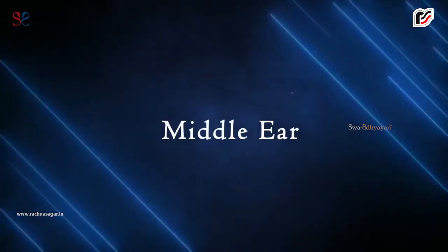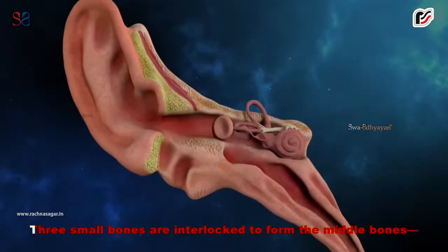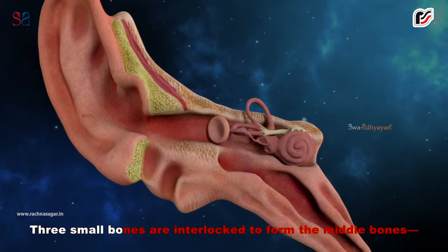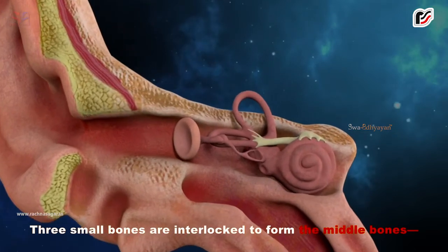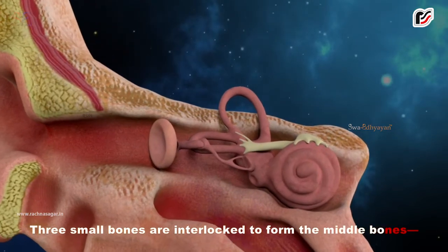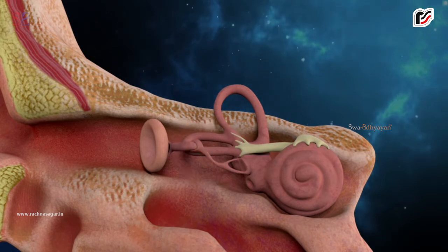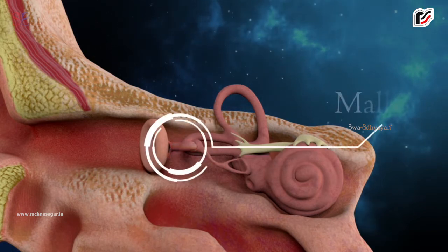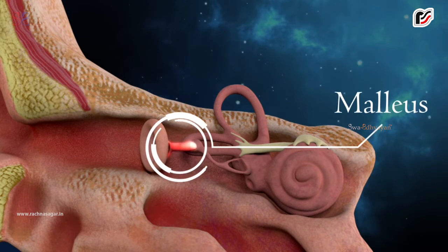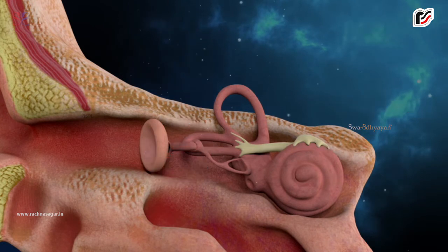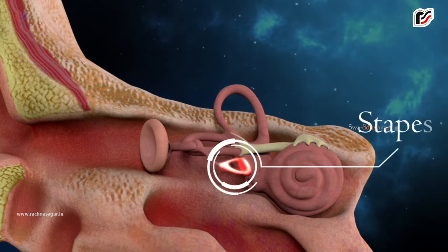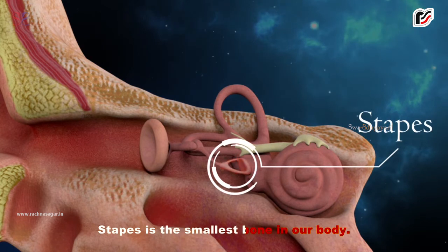B. Middle ear. Three small bones are interlocked to form the middle bones: Incus, Malleus, and Stapes. Stapes is the smallest bone in our body.